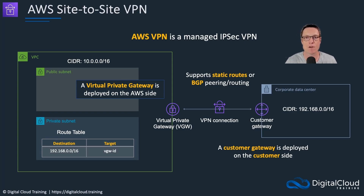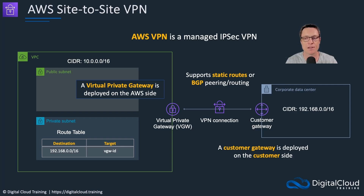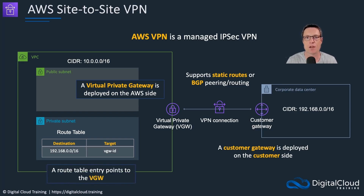In the VPC, we need a route table configuration if we want to route from the VPC to the on-premises network. We can see that this private subnet has a destination of the CIDR block of the corporate data center, and the target is going to be the virtual gateway ID — the virtual private gateway — which allows outbound connectivity from that private subnet to the corporate data center.